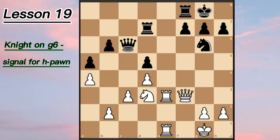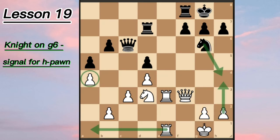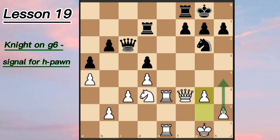Instead of protecting the pawn and playing passively — which in a lot of cases is very bad — Botvinnik plays g3. Why not h4 immediately? Because the pawn is hanging, so he is preparing g3, and the next move is h4. In the game, Black played rook to d6.